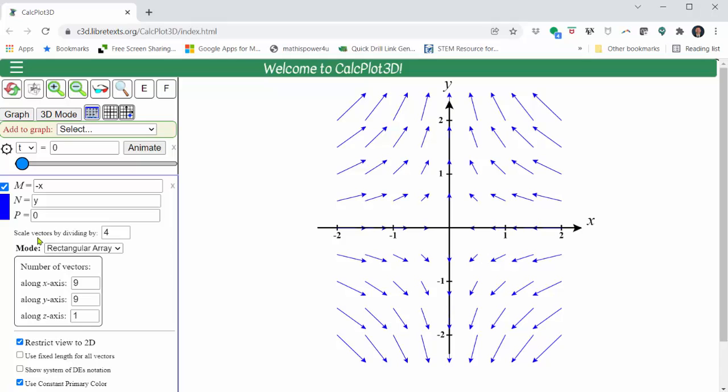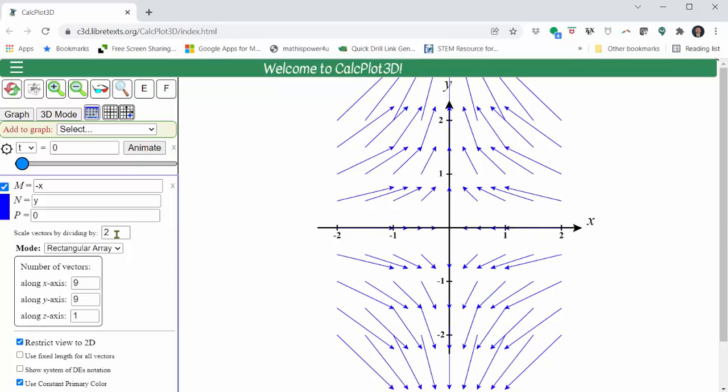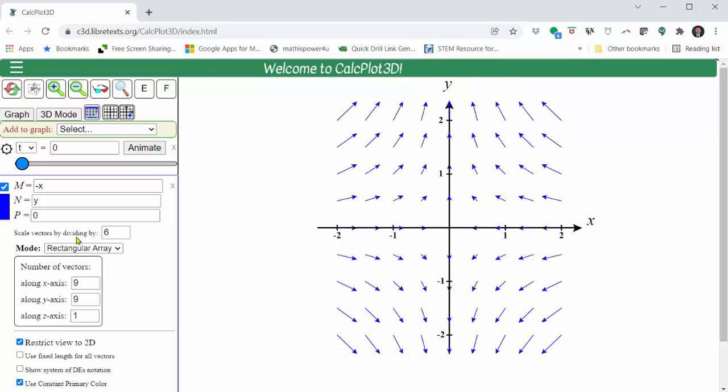Notice below the equations we have scale vectors by dividing by. By default we're dividing by 4. If we change the 4 to a 2, the vectors get longer. If we change the 2 to a 6, the vectors get shorter. Let's change the scaling back to dividing by 4.